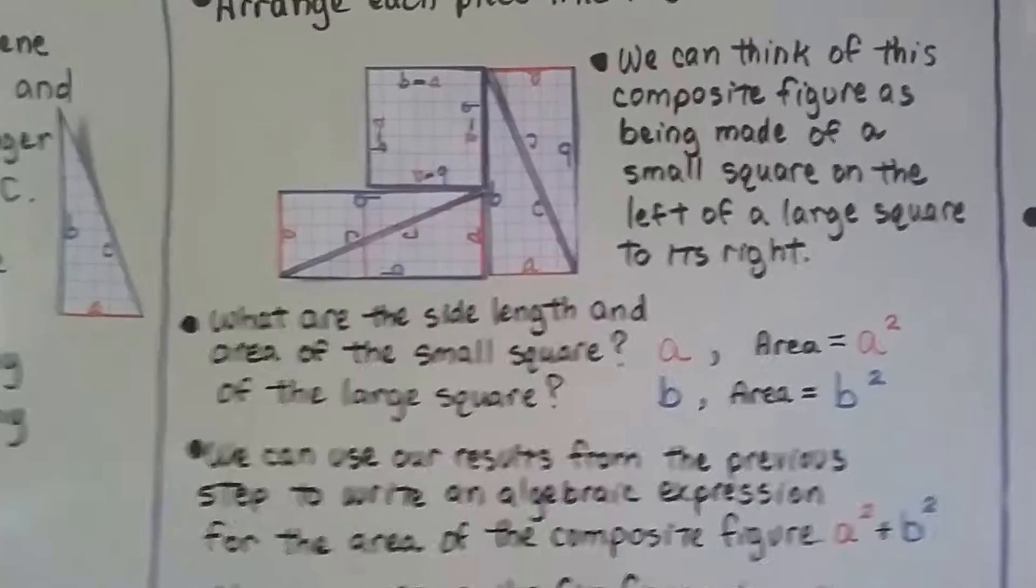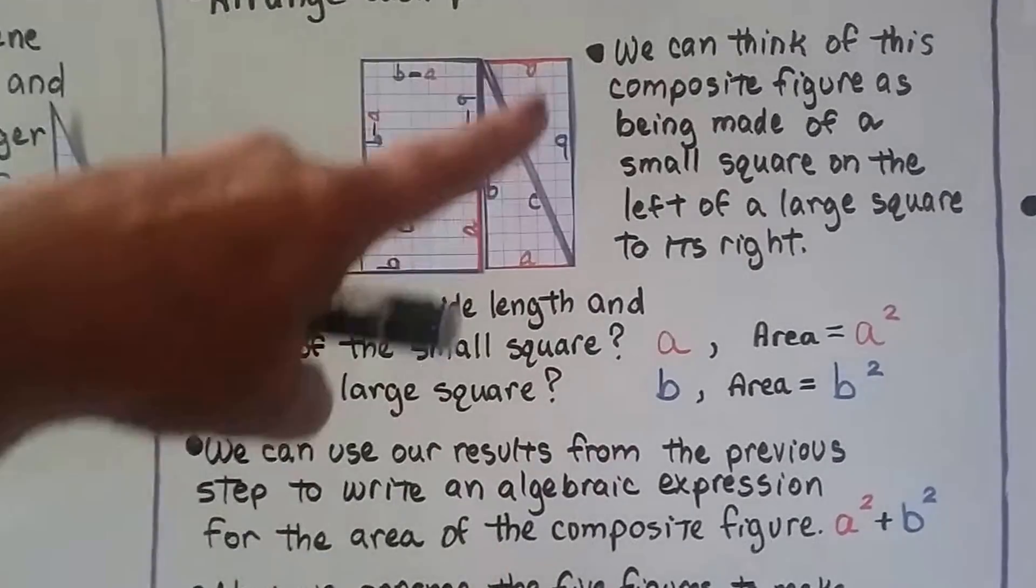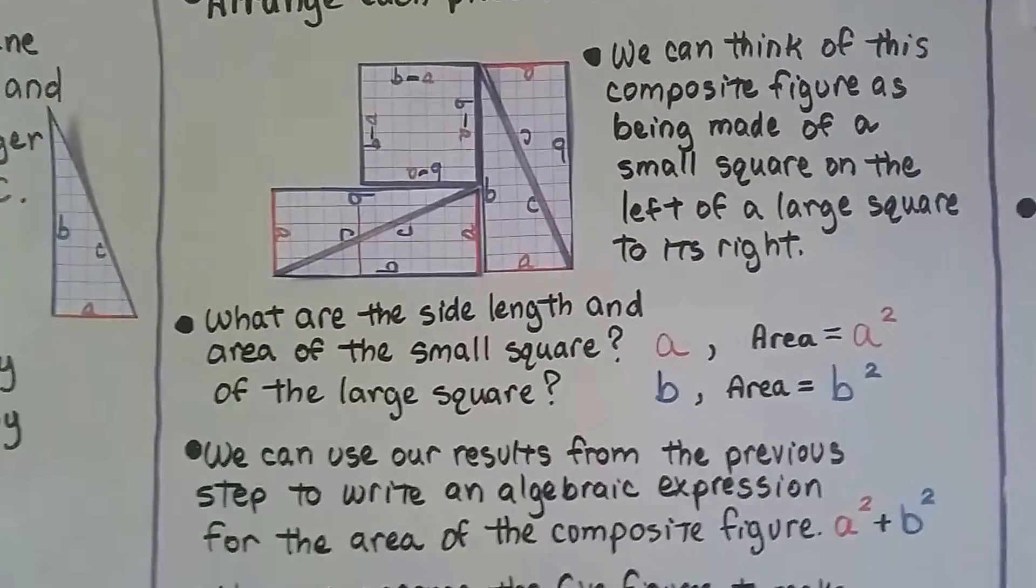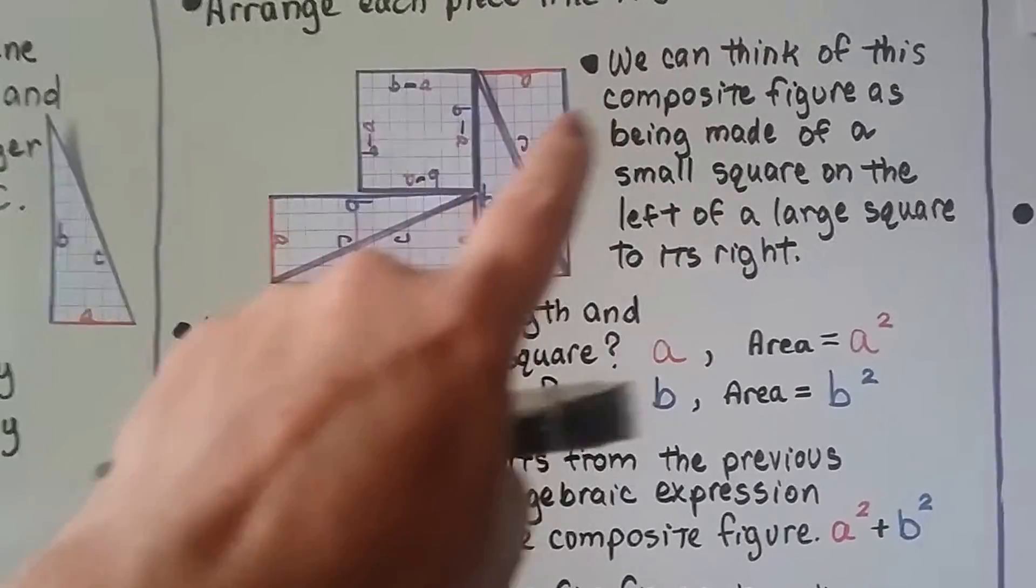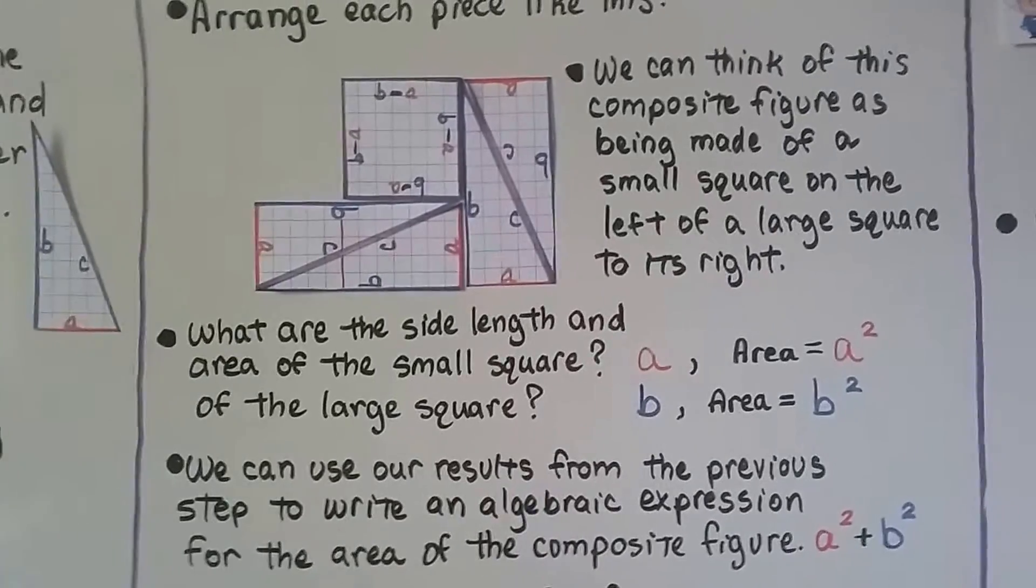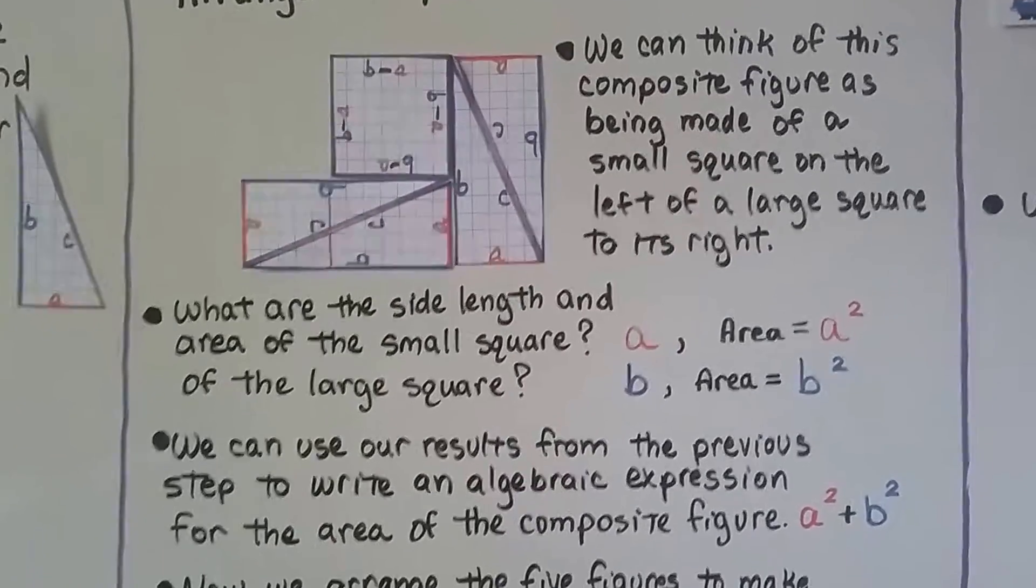What about the large one? Well, we've got a side length of b. Look at that. And the area would be b squared. Definition of a square is all the sides at the same length, so we would do b squared.